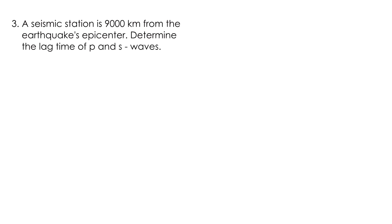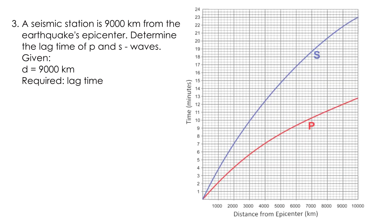For number 3: a seismic station is 9,000 kilometers from the earthquake's epicenter. Determine the lag time of P and S wave. Here, the given is the epicenter distance. What you're going to do is mark the length between the P-S curve that equals 9,000 kilometers. Then slide down to get the lag time. We get 10 minutes as the lag time.